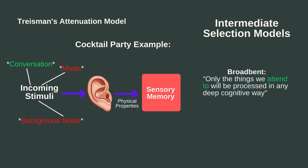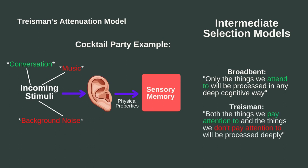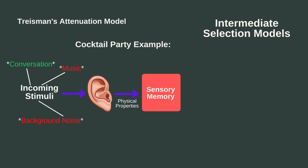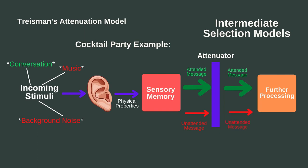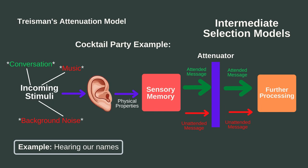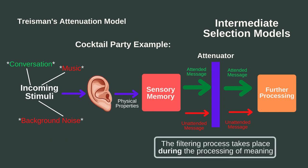However, while Broadbent argued only the things we pay attention to — in other words, the conversation — will be processed in any deep cognitive way, Treisman argued that we process both the things we pay attention to and the things we don't. She believed that we process meaning from both our conversation and all of the background noise. However, the processing of our conversation is prioritized and is done to a larger degree. The filtering process in her model therefore acts as an attenuator, similar to a remote control in which the volume is turned up for the attended message but turned down for the unattended message. Thus, Treisman's model allows for us to shift our attention to the person behind us saying our name, because although the processing of our conversation is prioritized, some processing of unattended stimuli still occurs. Because Treisman's model argues that the filtering process takes place while meaning is being processed, the model can be seen as an intermediate selection model.